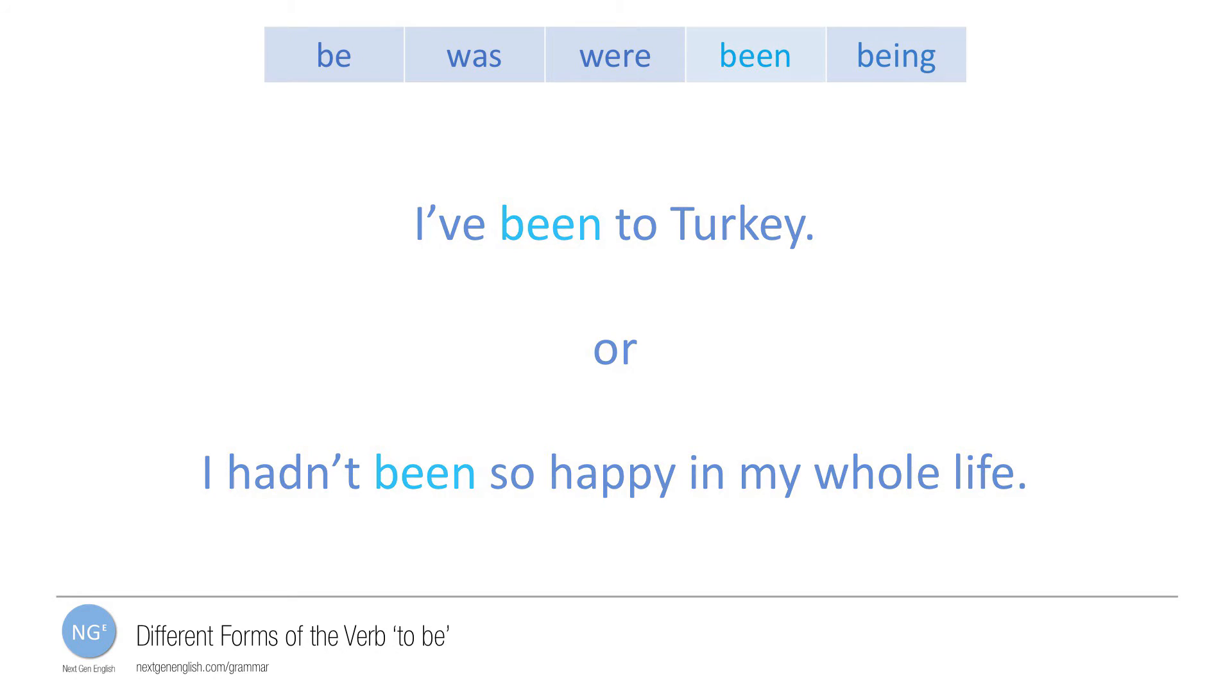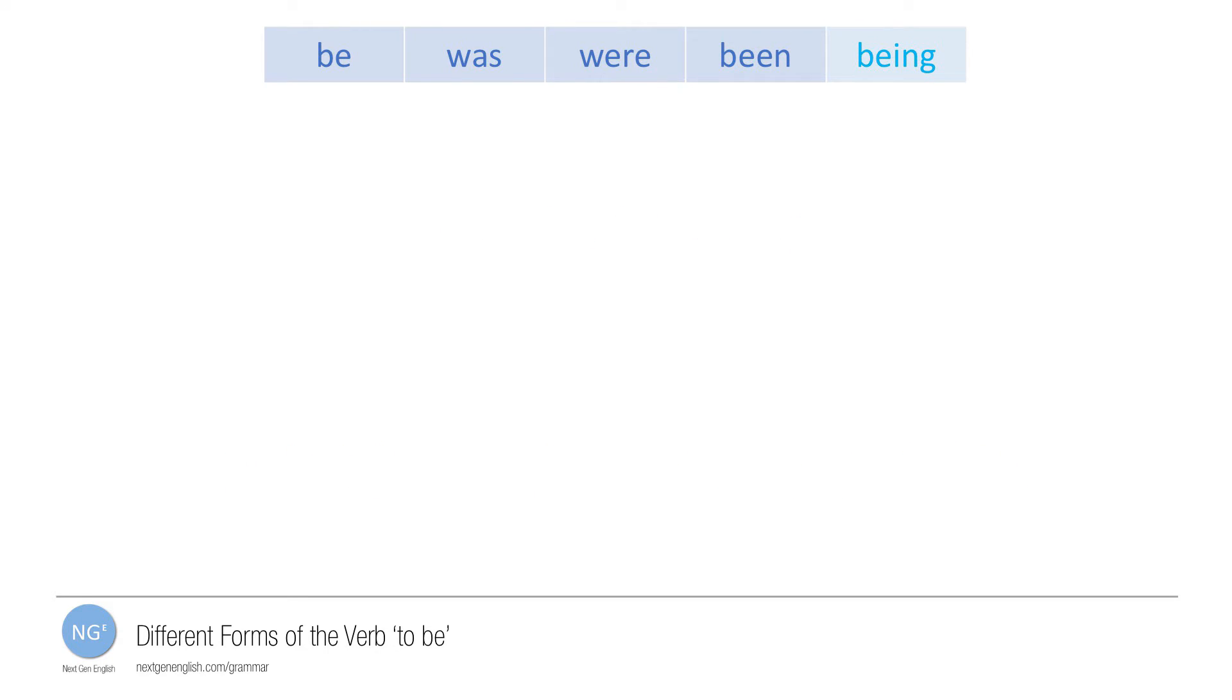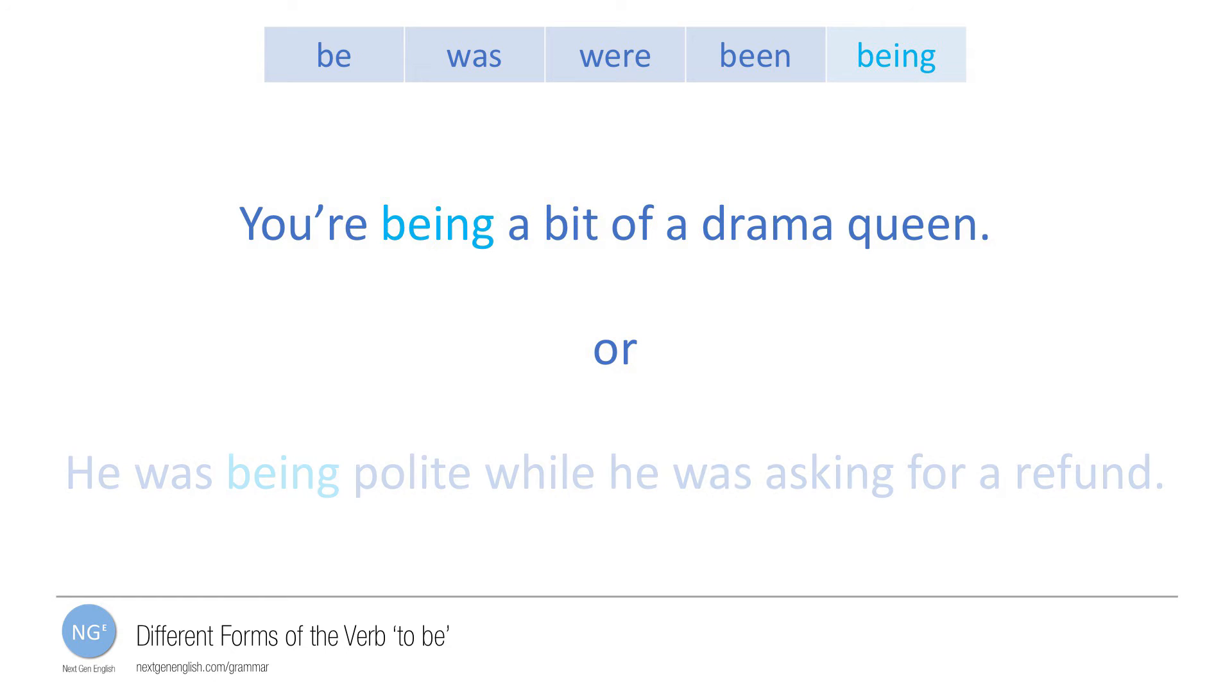Finally, being is the present participle form. For example, you're being a bit of a drama queen, or he was being polite when he was asking for a refund.